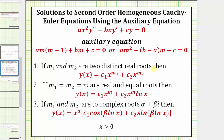Two forms are shown here, and we'll be using the form on the left. If we have two distinct real roots, this is the form of the general solution. If we have two real equal roots, this is the form. If we have two complex roots, this is the form. In each case, we assume x is greater than zero.